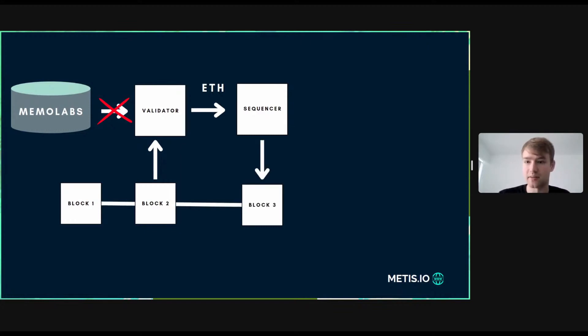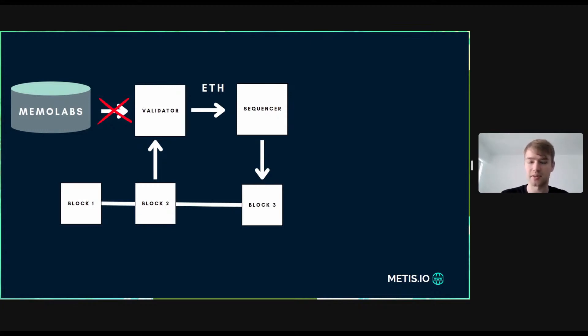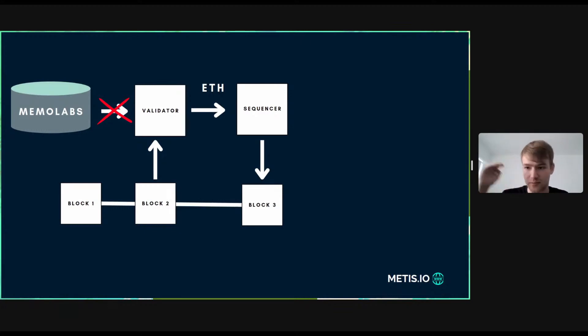Once the data is on-chain, this becomes an optimistic rollup. All the data is on-chain, so you can recalculate all of the state from the transactions present on-chain.